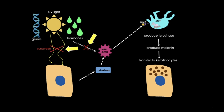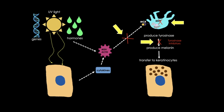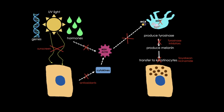We can also look at our synthesis pathway and identify multiple targets for modulating the production of melanin: blocking UV rays with sunscreen, blocking the production of hormones, using antioxidants to block the release of cytokines, hormone antagonists, receptor blockers, inhibition of MITF, tyrosinase inhibitors, or even blocking the transfer of melanosomes to keratinocytes. Exploring ways to inhibit this pathway is an area of very active research.